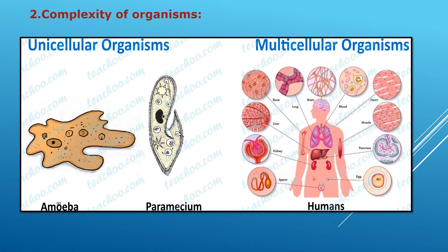The second criterion was complexity of organisms. Living organisms can be classified into two groups: unicellular and multicellular. Unicellular means having only one cell — amoeba and paramecium are unicellular organisms. Multicellular organisms have more than one cell; human beings are multicellular organisms.